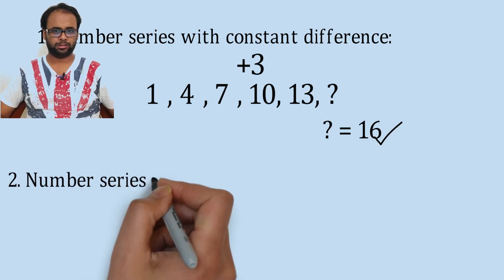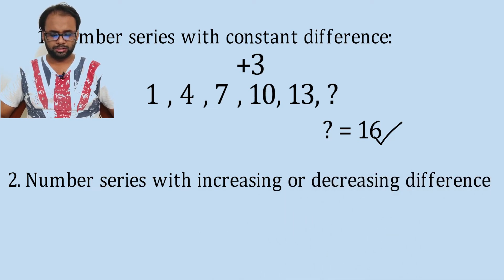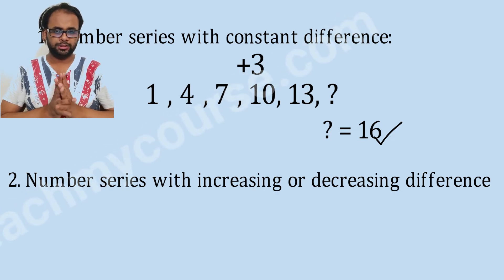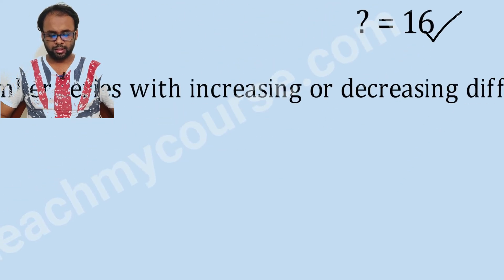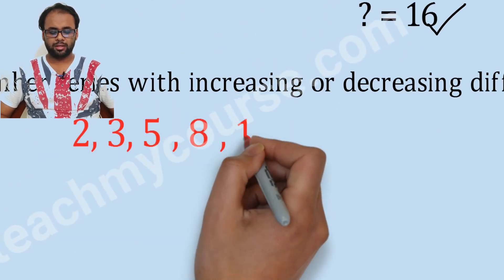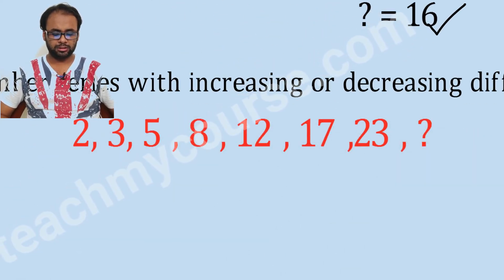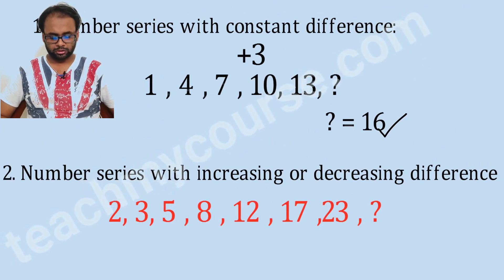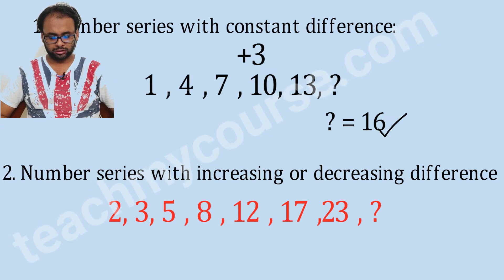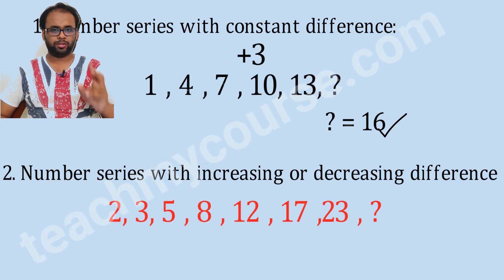Next we see the second type of series in the difference series which is with increasing or decreasing difference. Like the series 2, 3, 5, 8, 12, 17, 23. If you see carefully this series, what is the difference between the first two numbers, 2 and 3, it is 1.